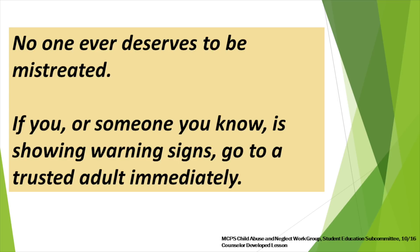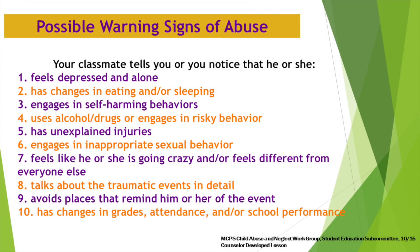If you or someone you know is showing warning signs of any type of abuse, immediately go to a trusted adult. There are many warning signs of possible abuse. A classmate or friend may tell you they feel depressed and alone. You might notice changes in someone's eating and/or sleeping habits. Sometimes victims engage in self-harming and/or risky behaviors or use alcohol and/or drugs. If a friend or classmate has injuries they can't explain, this may be a sign of physical abuse.